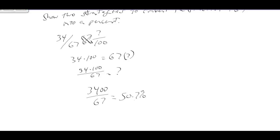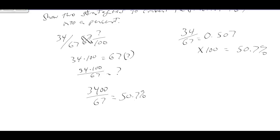Strategy two: we simply take 34 divided by 67, which equals 0.507, and then multiply by 100 to get 50.7 percent. If you just take the fractional form, do your division, and multiply by 100, you get the percent. These are two strategies to convert a fraction into a percent.